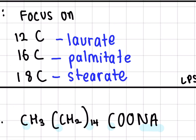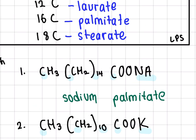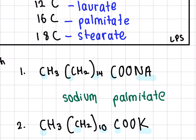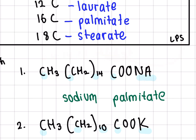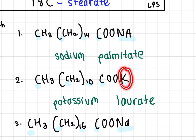For example, if we observe here, the metal being used is sodium, so they must have used sodium hydroxide as their strong alkali. Now let's count the amount of carbons: 1 plus 14 plus 1 gives you 16. And 16 is under P, so it's sodium palmitate.